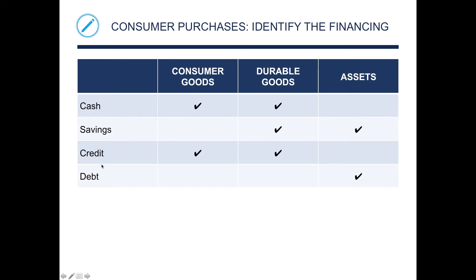When identifying the financing, you have cash, savings, credit, and debit. Cash is used for consumer goods and durable goods, but not really for assets — you don't typically walk into the BMW store and just drop cash for a car, or go to a home builder and drop $250,000 in cash. Savings is mostly for durable goods and assets. Credit can be used for consumer goods and durable goods. Debt is for assets — things like a mortgage or a large line of credit that span more than a year.